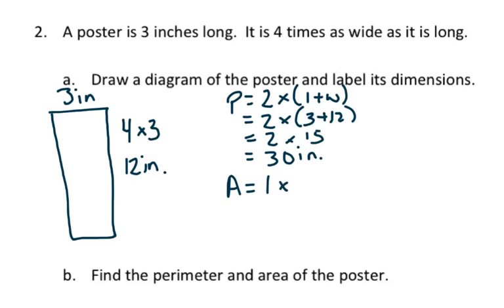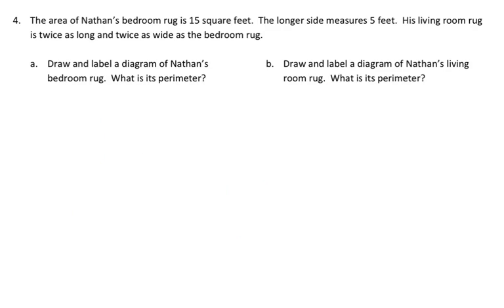Area is length times width. So we're going to multiply 3 times 12, and we have a product of 36, and that's inches squared for area.